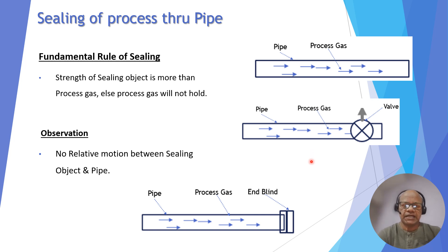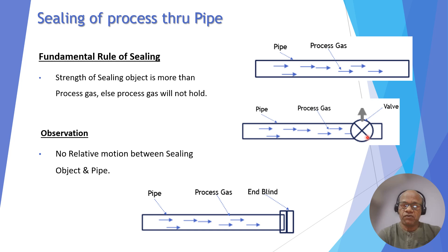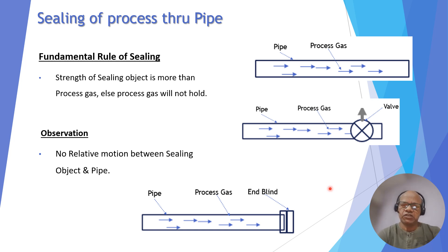The fundamental rule is that the strength of the wall and the strength of the end blind must be greater than the pressure of the process gas, otherwise it will not hold. A second important point is that this assumes there is no relative motion between the wall and the pipe, or between the end blind and the pipe. If there is relative motion, we must look for other options.